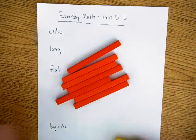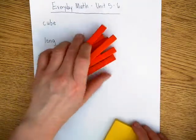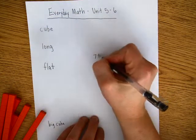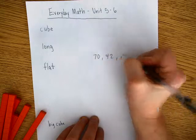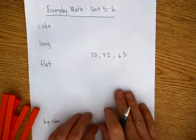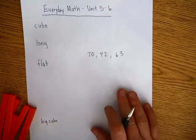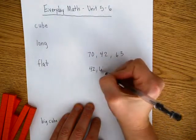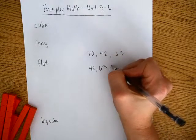Okay, we want them to be able to compare and order whole numbers. So, for example, if we have a whole bunch of numbers, if we have seventy, forty-two, sixty-three, we would want the kids to be able to put those in order from smallest to largest, or largest to smallest. So they'd say forty-two, sixty-three, seventy.